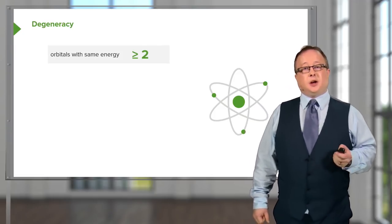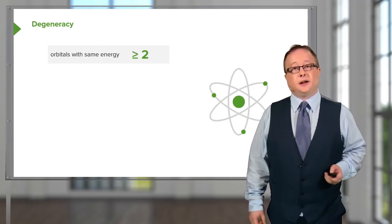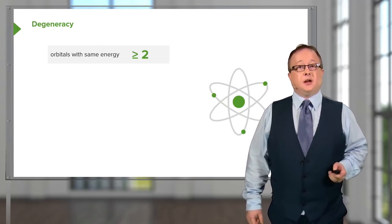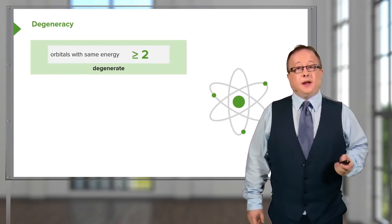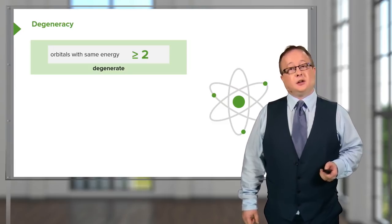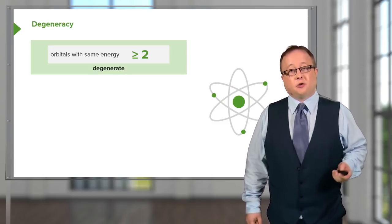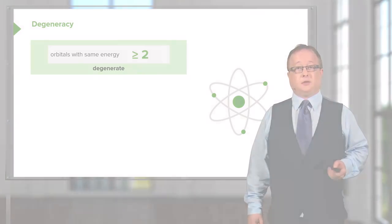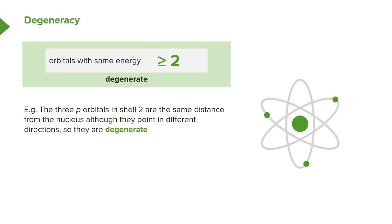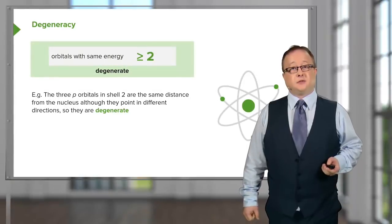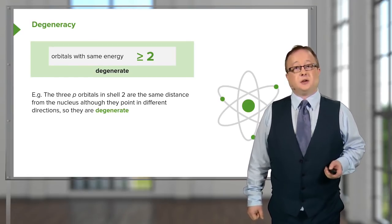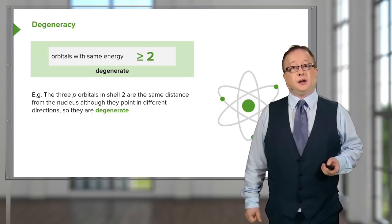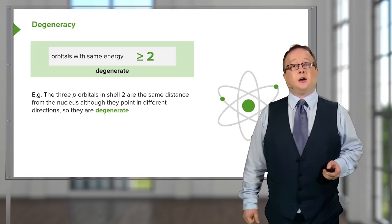Degeneracy — this is what I alluded to in the case of P-orbitals and as we'll see in D-orbitals — refers to orbitals with the same energy. When they have the same energy and the same orientation, they're regarded as degenerate — that is, superimposable onto each other. Degeneracy is based on the idea that whilst they have the same energy and the probability of finding electrons is the same distance from the nucleus, they point in different directions. By rotating them 90 degrees in the three axes, they would all be identical — superimposable — and therefore termed degenerate.